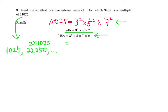So what you can do now is compare. 11,025 has 3 squared, but 945 is 3 cubed. So it doesn't really matter because it has 3 squared already.